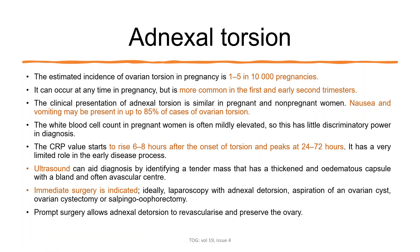Adnexal torsion is one of the acute conditions in pregnancy, occurring in about one to five in 10,000 pregnancies. It can occur at any time but is most common in the first and early second trimester. Clinical presentation is the same as in a non-pregnant woman — mostly nausea and vomiting in about 85% of cases. White cell count is elevated, and CRP begins to rise six to eight hours after onset of torsion, with a peak level at 24 to 72 hours.